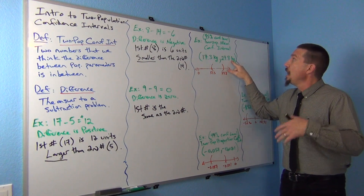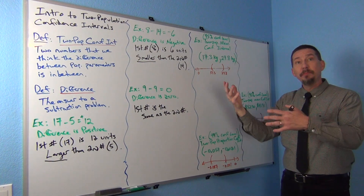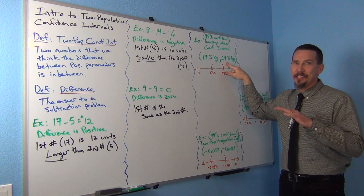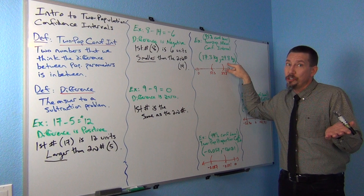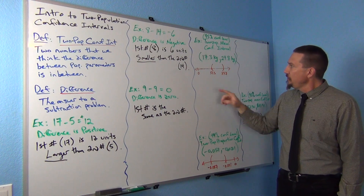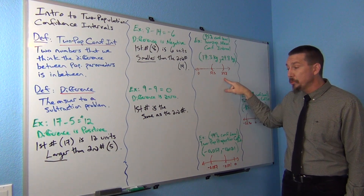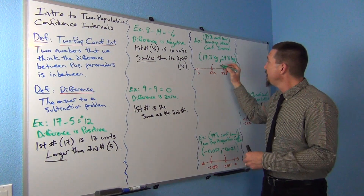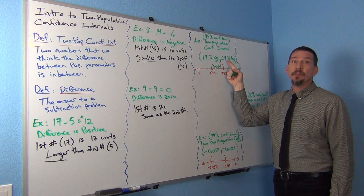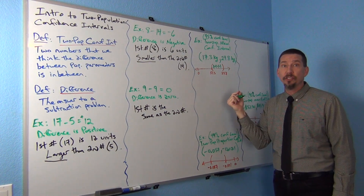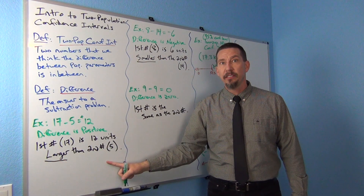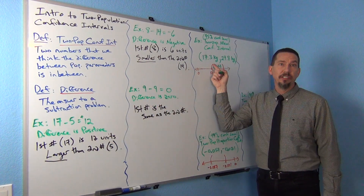Some people will write the sentence: I'm 95% confident that the difference between the population means is in between 17.3 kilograms and 29.8 kilograms. But I want students to know this better — what are the signs of these numbers? Look at the number line below. Aren't all the millions of numbers between 17.3 and 29.8 all positive? That tells us the difference is positive, so population one minus population two gives a positive answer. If our difference is positive, that tells us the first is larger than the second, and the answer is telling us how much larger.